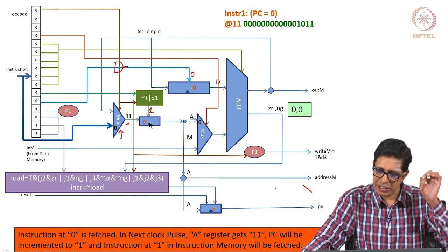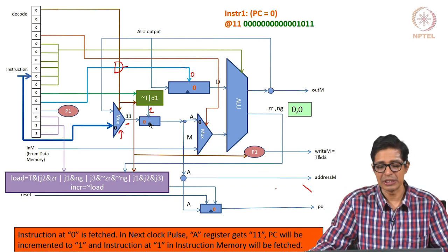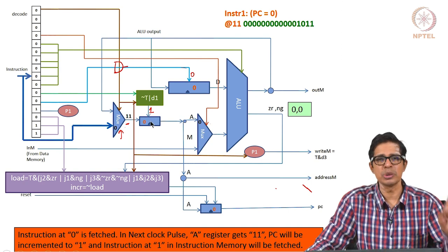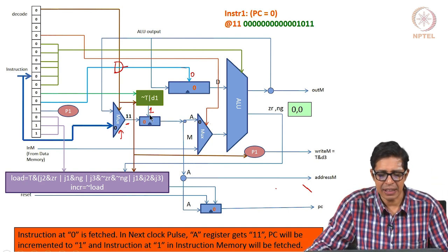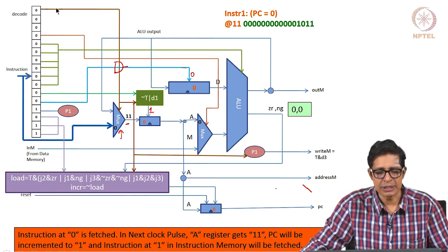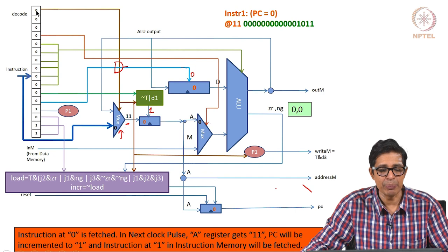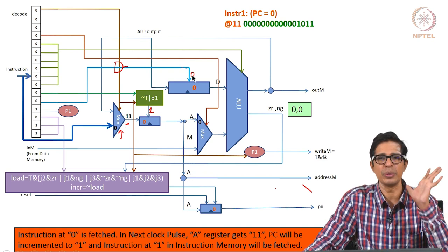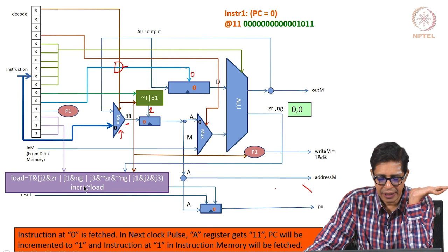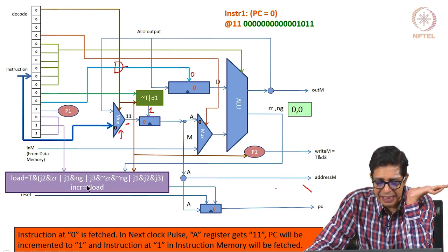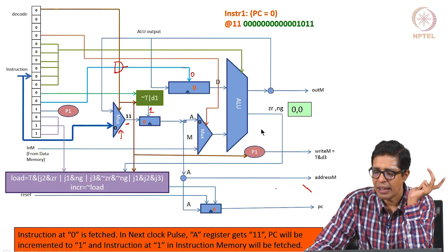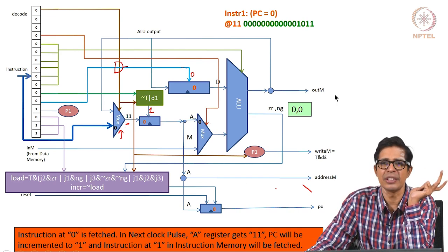When the A register has to change on the tock of the clock, the load for the A register should be 1, which happens here. The type bit (T bit) distinguishes between an A instruction and a C instruction. This is an A instruction, so ~T is 1, making A_load = 1 while D_load = 0. Increment for the PC is 1 and writeM is 0, so nothing gets written to memory.